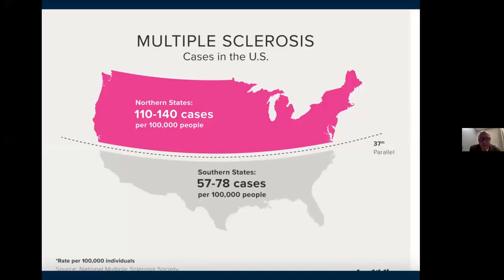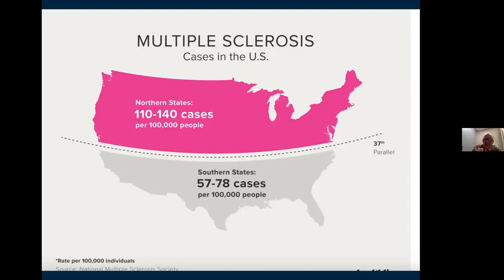This is a picture of the United States showing the 37th parallel. The further away from the equator you are, the higher the prevalence of MS. It comes around where Washington DC is — 110 to 140 cases per hundred thousand in the north, 57 to 78 cases per hundred thousand in the south. If you are born in the south and moved to the north after the age of puberty, you carry with you the risk of the south. If you move to the south before puberty, you carry the northern state risk.